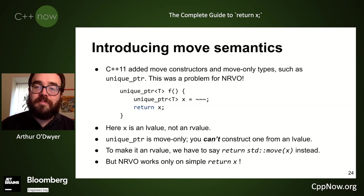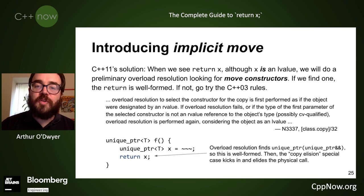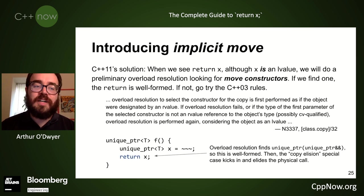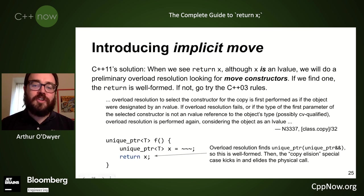During the C++11 release cycle they addressed this: when we see 'return x', even though x is an lvalue, we do a special preliminary overload resolution looking specifically for move constructors. If we find one, the return is well-formed even though you're normally trying to move out of an lvalue. The reason: we allow people to write just 'return x' so they can get NRVO / copy elision. If they wrote something more complicated, that would turn off this super-useful optimization.